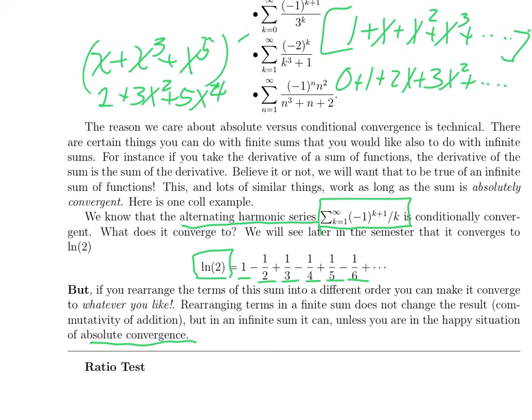But, here's a strange fact. You know that for finite sums, you can just rearrange the order. 1 - 1/2 is the same thing as -1/2 + 1. You can rearrange the terms in a finite sum and get the same answer. That's called the commutativity of addition. You cannot do that for infinite sums if they're conditionally convergent.